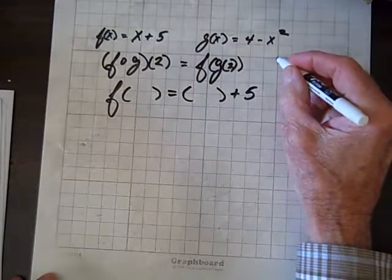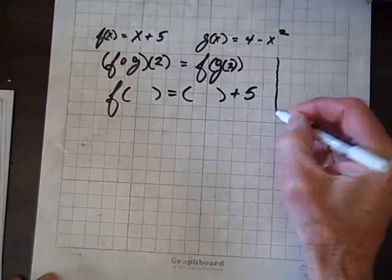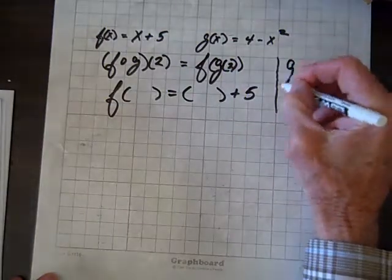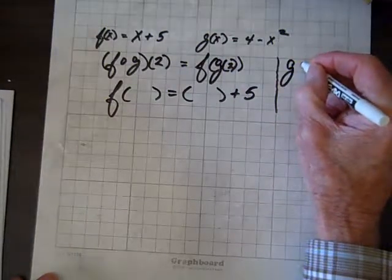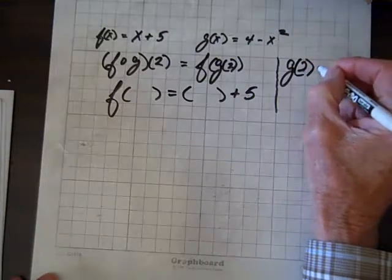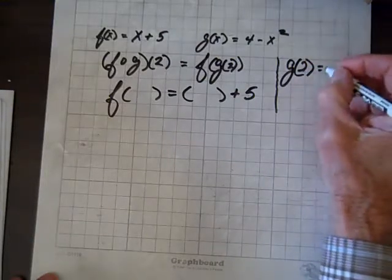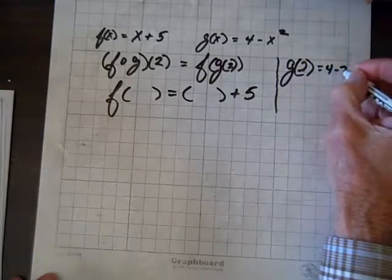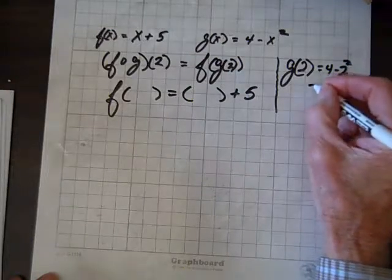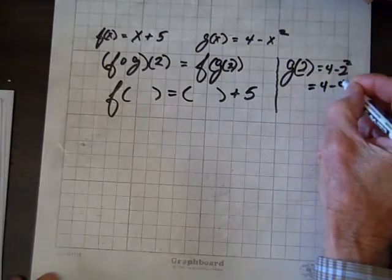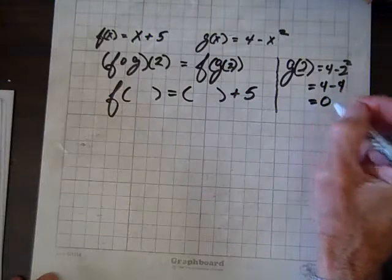And by the way, before we go too far, let's find g of 2. When you agree, g of 2 equals 4 minus 2 squared, which is 4 minus 4, which equals 0.